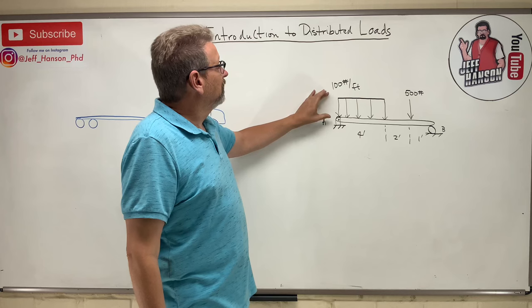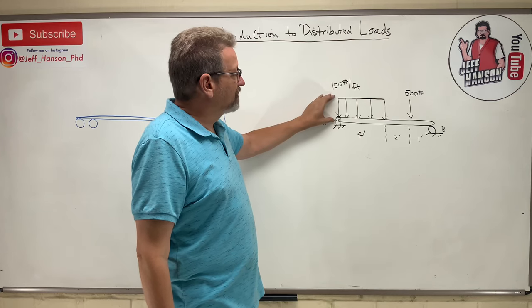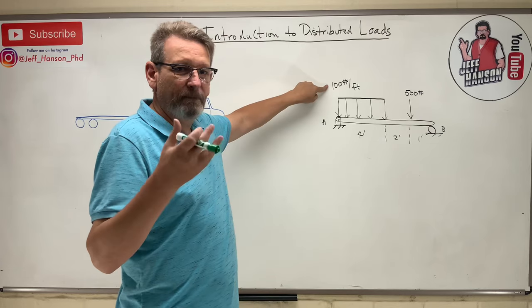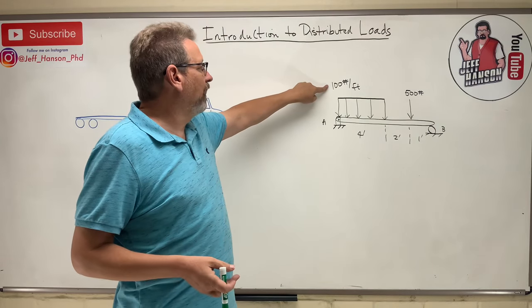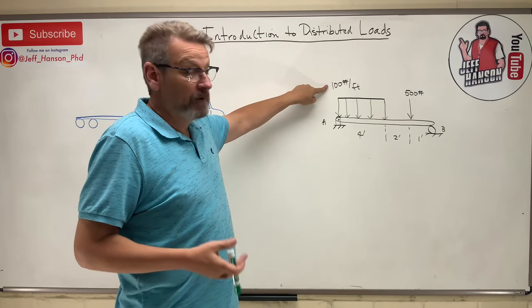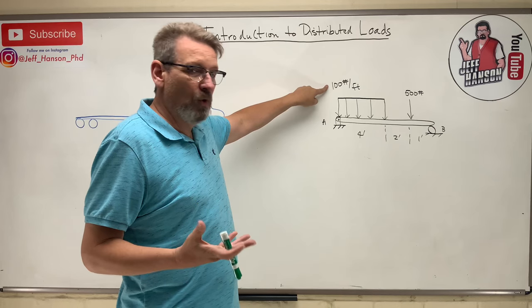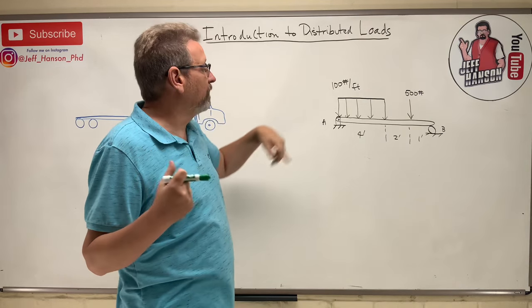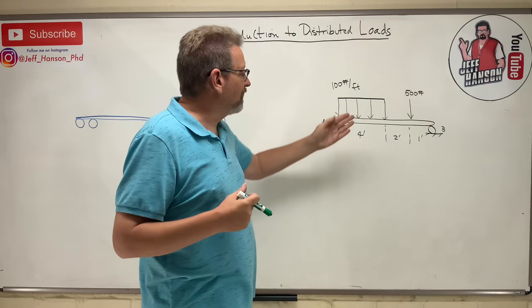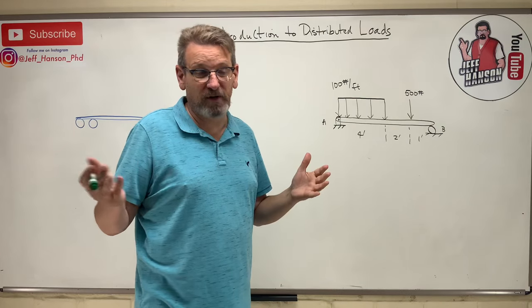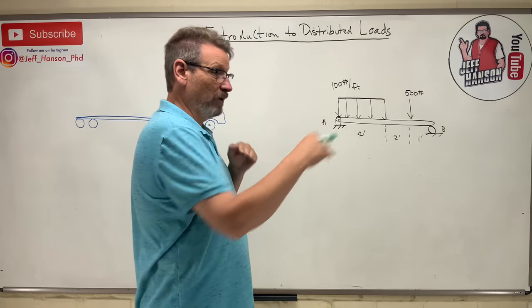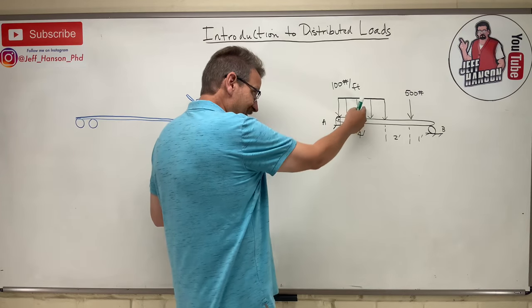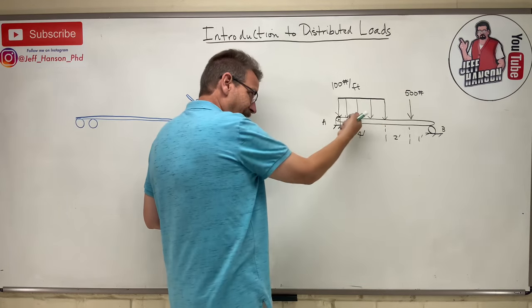So the distributed load looks something like this. You'll see it given in some kind of weight per length. In this case, 100 pounds per feet. So for every foot I go, I'm going to accumulate 100 pounds of weight. That's what the distributed load looks like. This is what we call a rectangular distributed load. So it's even across the whole thing. So how do we deal with that? I know how to deal with that, but I don't know how to deal with that.